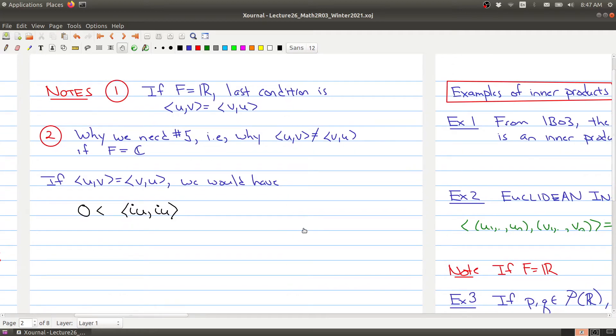And you may wonder, why do we even need that condition number five? Why is it the case that we can't have the inner product of u, v equal to the inner product of v, u? Why do we actually have to introduce what looks like a new level of complexity? Well, this is what would happen if you were to allow this property over the complex numbers.